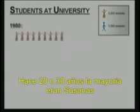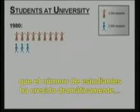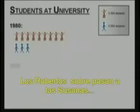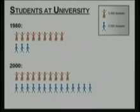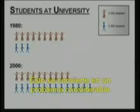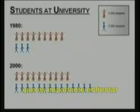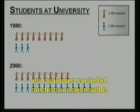The statistics also carry an important message. 20 or 30 years ago, there were mostly Susans at the universities. Nowadays, however, as student intake has increased dramatically, the Roberts now outnumber the Susans. This makes for a considerable problem which is important to tackle for any responsible modern society.